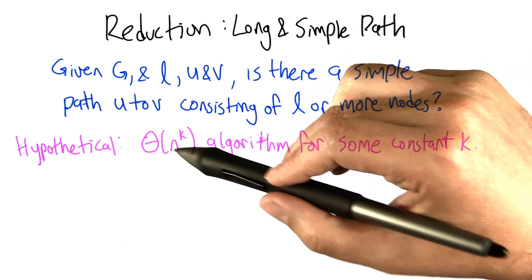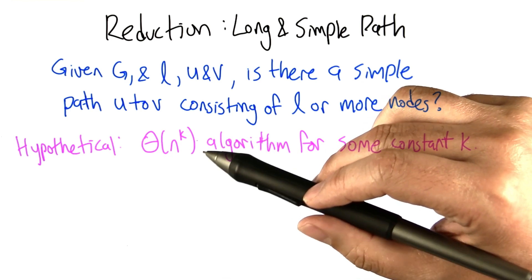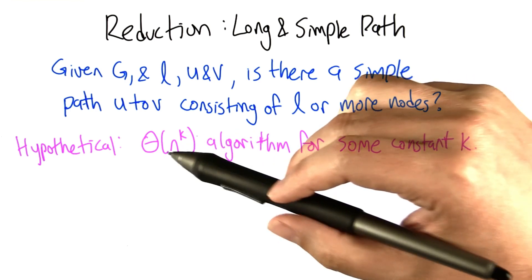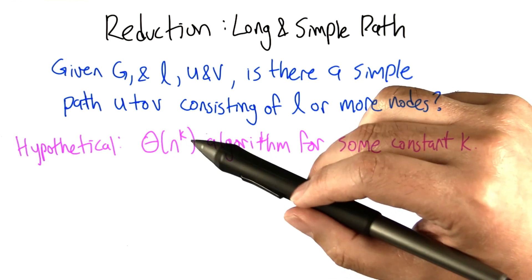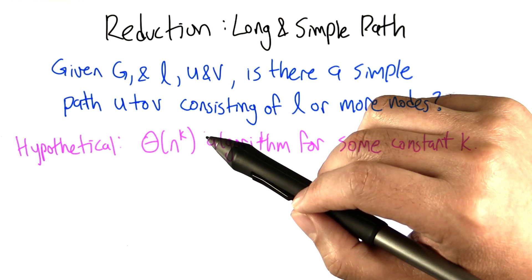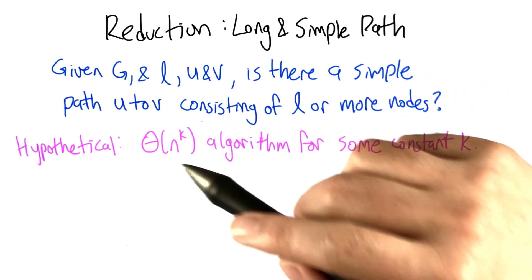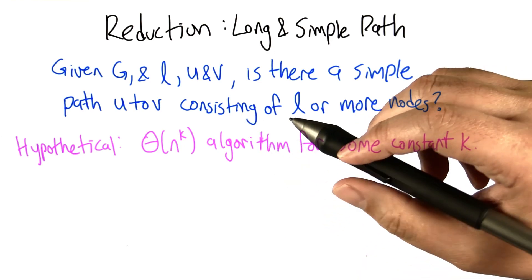So big theta of n squared, or 10, like big theta of n to the 10th, or 1,000, big theta of n to the 1,000. But k is not a function of n, so it can't be exponential. It's got to be bounded by some polynomial. It could be a nasty polynomial, but let's just imagine that it's bounded by a polynomial.